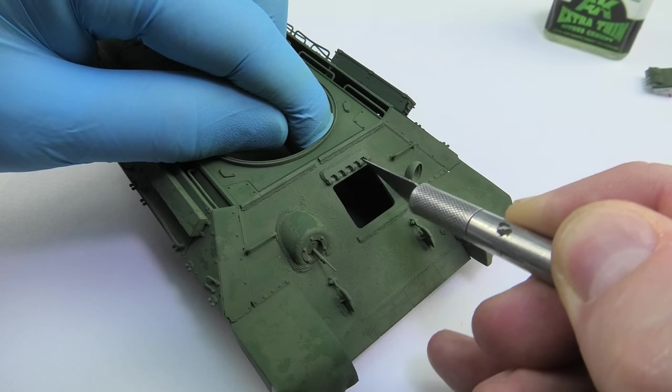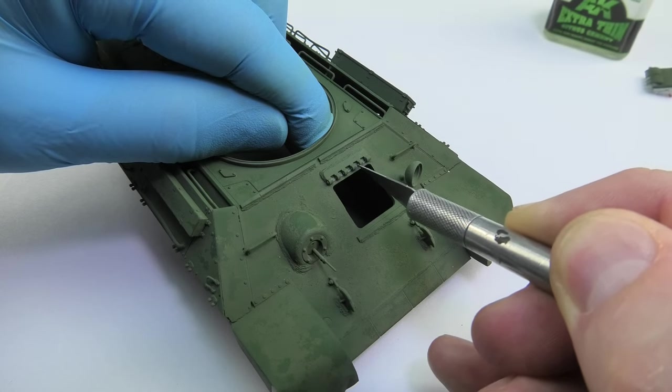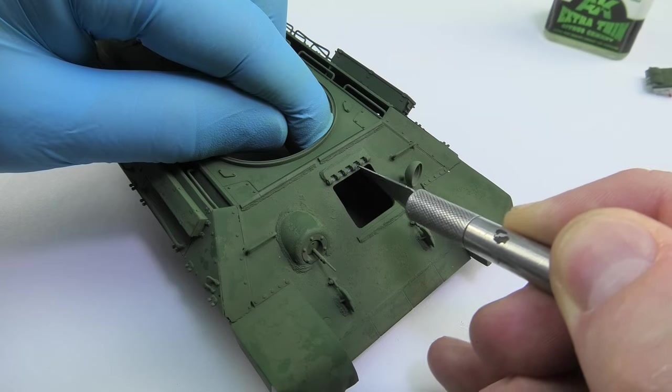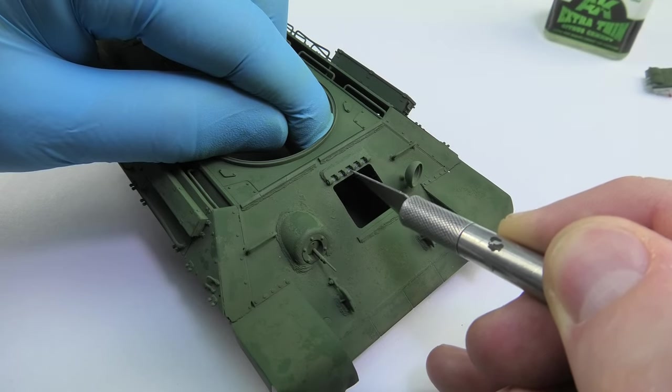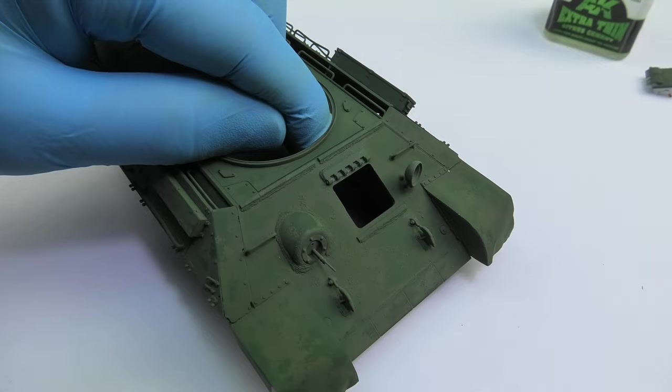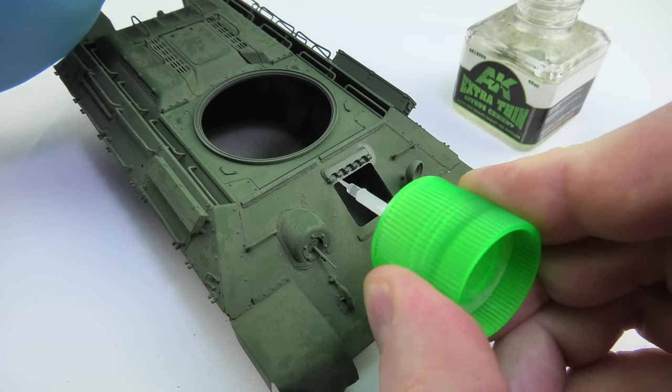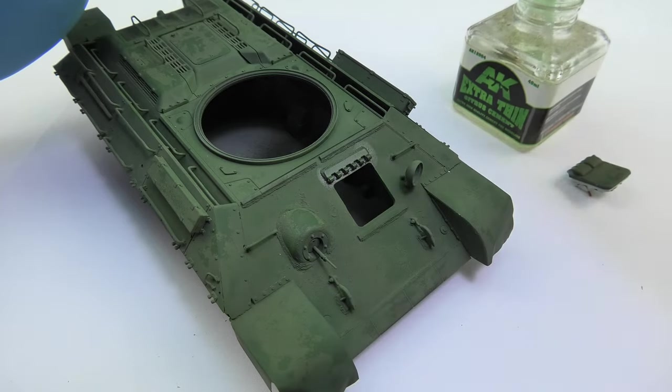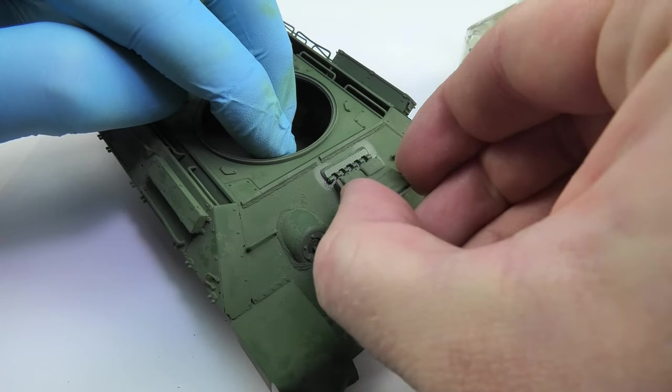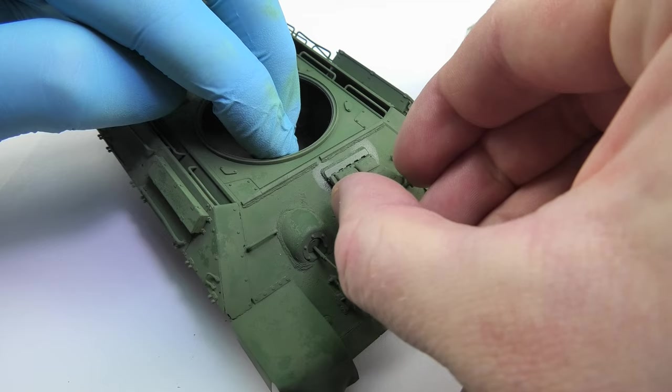After the paint dried I decided to complete the driver's hatch. In an invisible place under the hinge I scratched off some paint so that the glue got a good joint. Now you can clearly see how the paint has soaked but don't worry. Everything will evaporate in a moment and not even the slightest trace will be left.